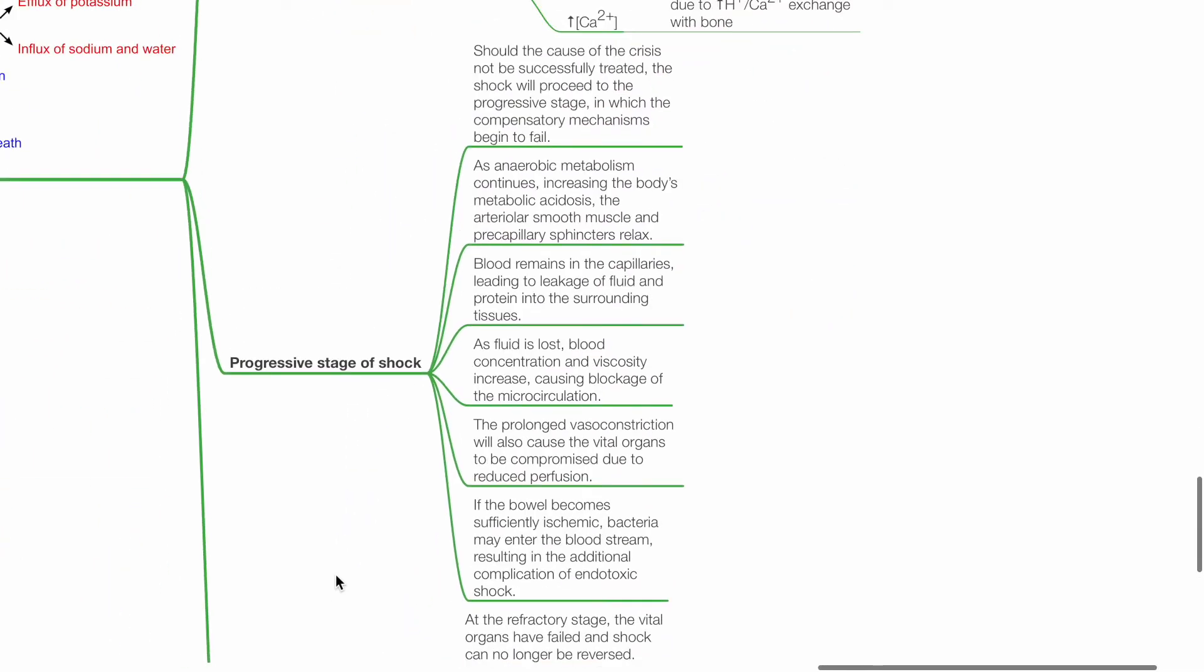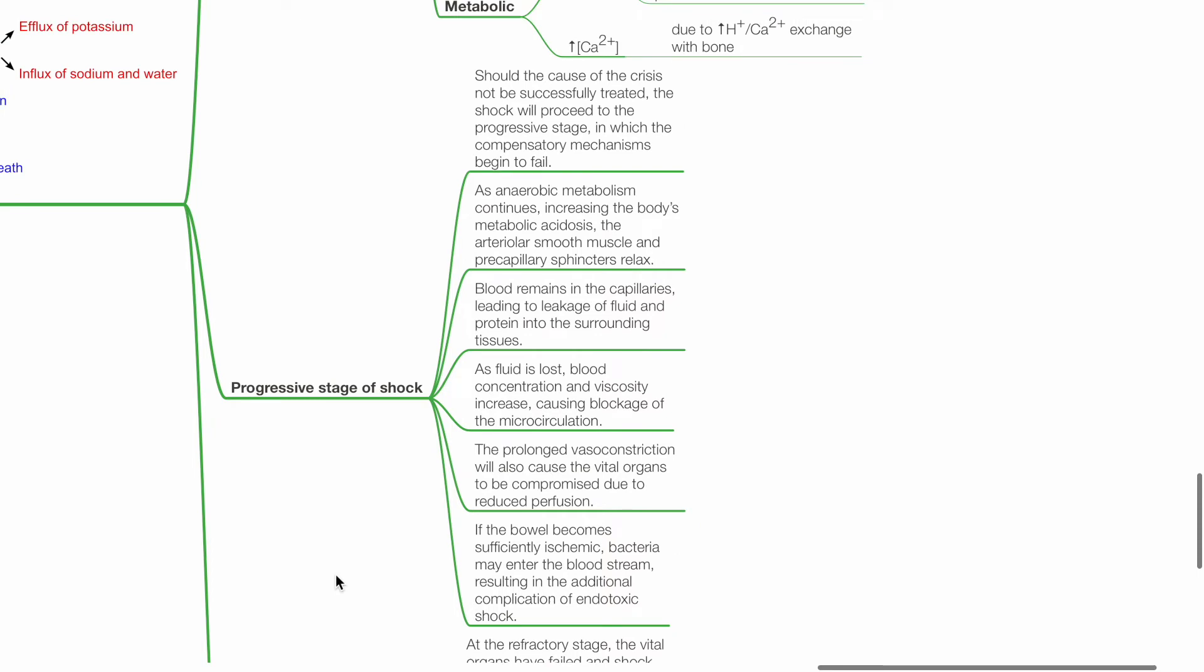Progressive stage of shock: Should the cause of the crisis not be successfully treated, the shock will proceed to the progressive stage in which compensatory mechanisms fail. As anaerobic metabolism continues, increasing the body's metabolic acidosis, arteriolar smooth muscles and pre-capillary sphincters relax. Blood remains in the capillaries,